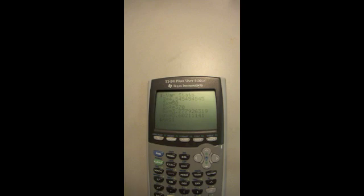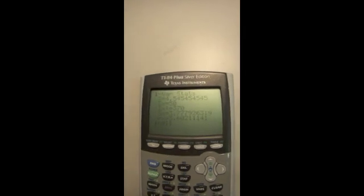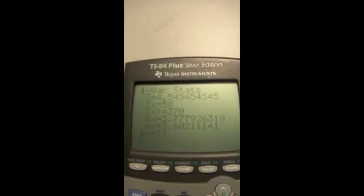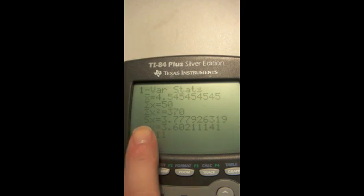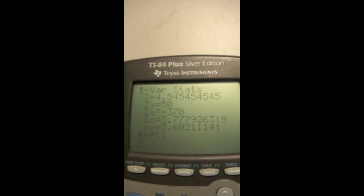On the screen you should now see a set of statistics including the mean which is denoted by the X with a bar at the top 4.54 and the standard deviation denoted by the SX which is the sample standard deviation the one you are most likely to use when working in biology.